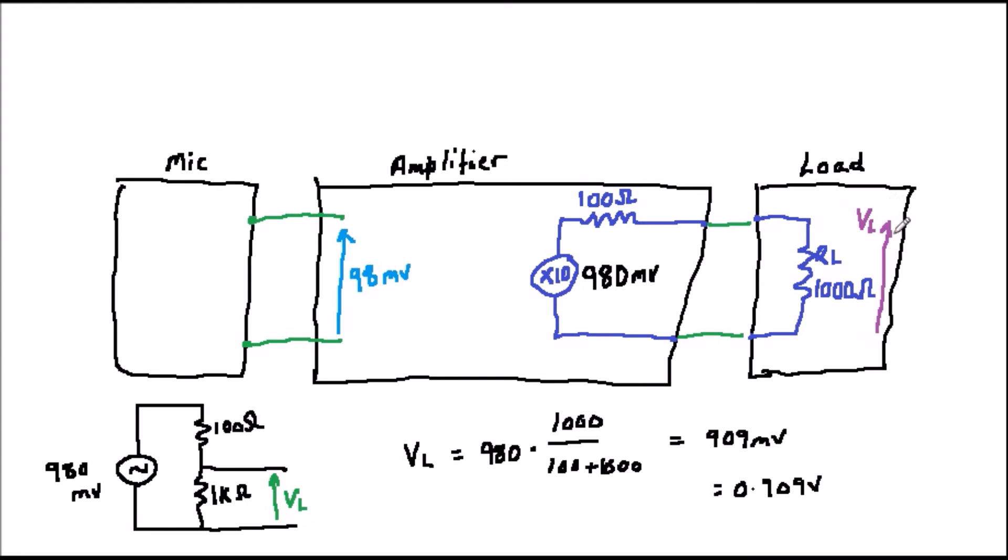So, we fed 100 millivolts into a times 10 amplifier, and just by common sense we would have expected 1 volt to come out, but in actual fact only 910 millivolts approximately does come out. All because some of the voltage is lost across the input and output impedances of the circuits when they are connected together.